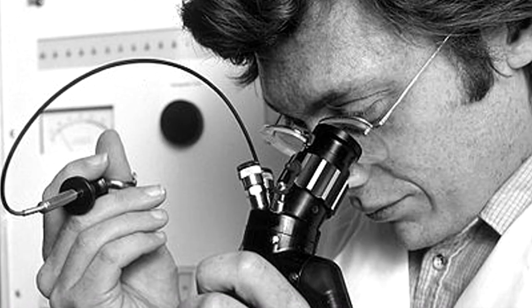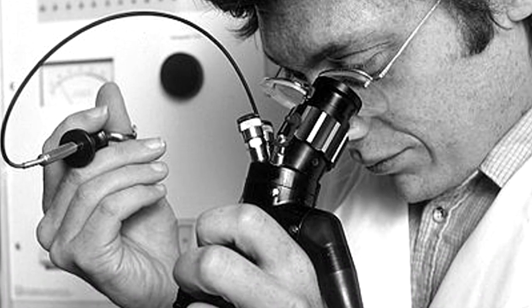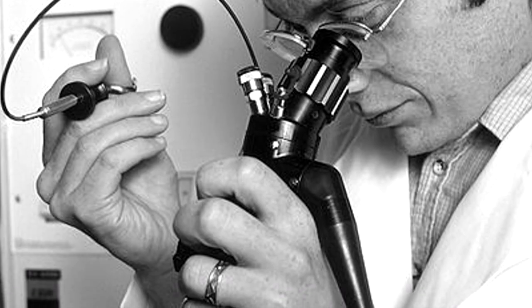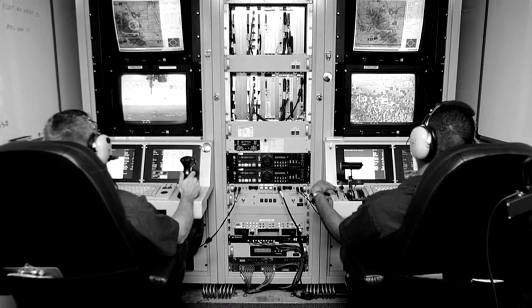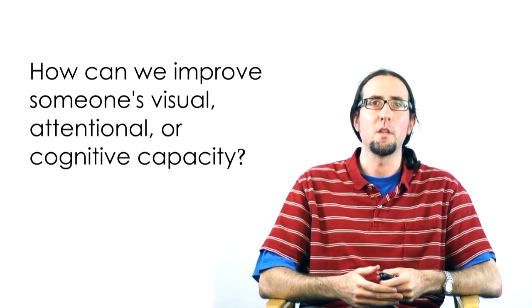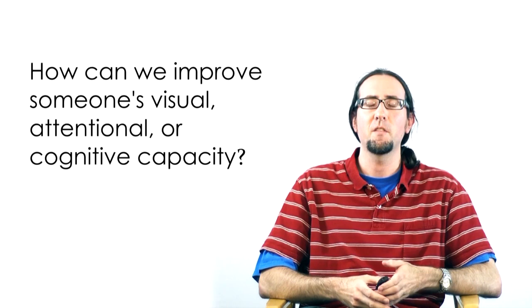This is important in cases where people have suffered a stroke and suddenly their visual system is impaired. You need to rehabilitate them, or it can be important in cases where people have jobs that require different types of visual skills. For instance, endoscopic surgeons need very different types of visual skills than your day-to-day person, the same with an Air Force pilot. So the question is, how can we improve someone's visual capacity or their cognitive capacity?